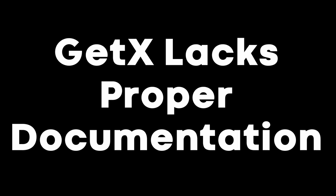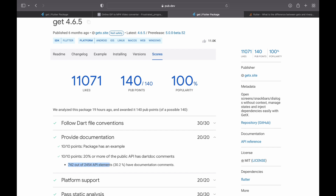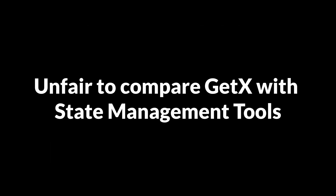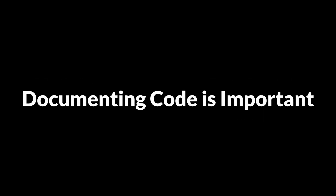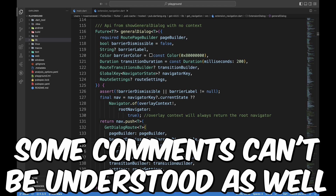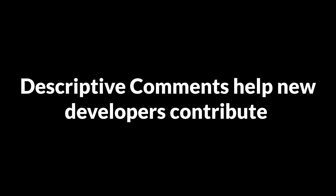The fifth disadvantage — and probably the biggest one — is that GetX lacks proper documentation. According to pub.dev, 744 out of 2,454, that is 30.3% of the total API elements, have documentation comments. To give you perspective, Bloc has 100%, Riverpod 94%, and Provider 90.1%. It's unfair to compare GetX with pure state management tools since GetX is more than that, but documenting code is quite important for packages. There are many hidden features as a result of this lack of documentation, and the codebase is large with many classes, variables, and methods lacking comments.